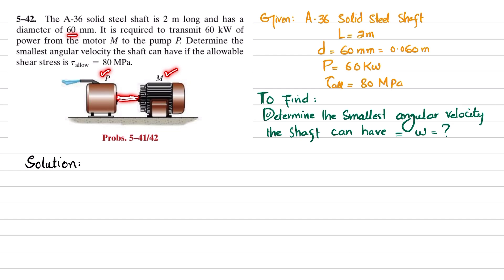The solid shaft has a diameter of 60 millimeters and is required to transmit 60 kilowatts of power from motor M to pump P. The allowable shear stress of this shaft is 80 megapascals, so you have to determine the smallest angular velocity ω of this shaft.